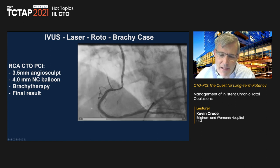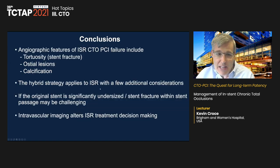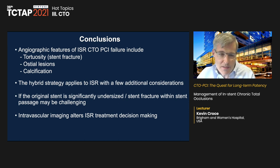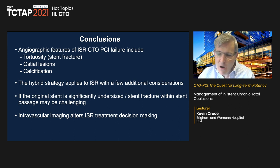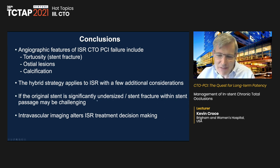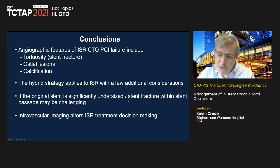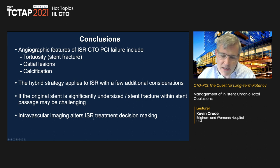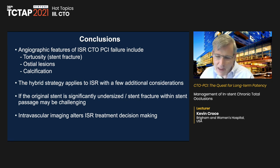After rotational atherectomy we achieved good expansion with a 4.0 NC balloon. Since the patient already had three layers of metal, we decided not to re-stent and treated with brachytherapy. In conclusion, angiographic features associated with in-stent CTO PCI failure include tortuosity — often associated with stent fracture — ostial lesions, and calcification. The hybrid strategy applies to ISR with additional considerations. Laser atherectomy, lithotripsy, and occasionally mechanical atherectomy can be used. Intravascular imaging alters ISR treatment decision-making.